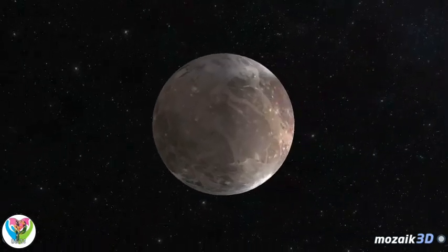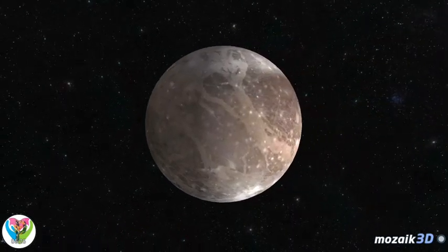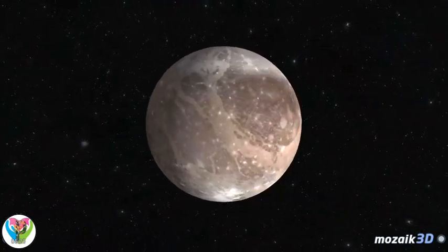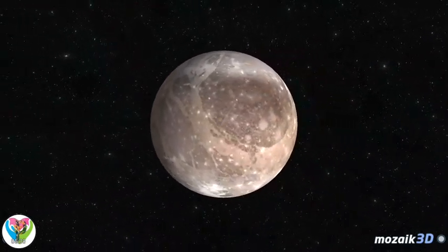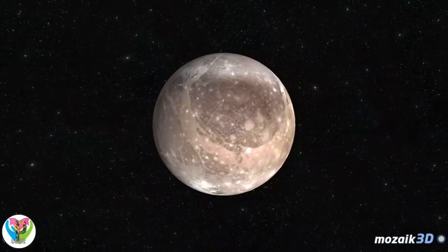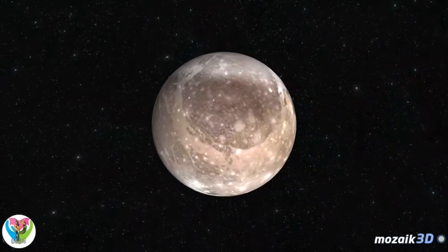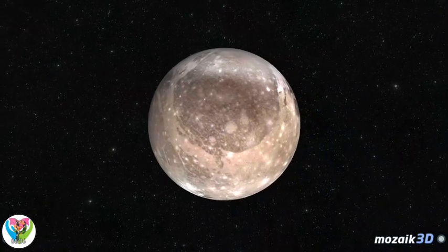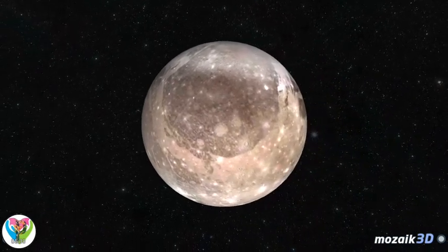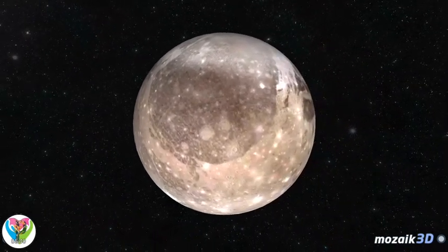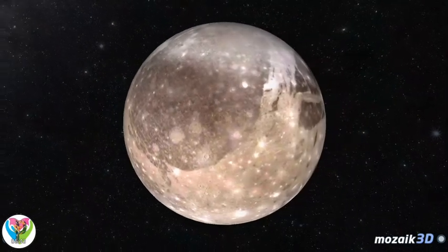Ganymede is the largest moon in the solar system. Its diameter is slightly greater than that of Mercury, but it is only half as dense as that planet. Its surface features dark areas with craters and younger, lighter, tectonically more active areas. The crust of Ganymede is composed of ice.